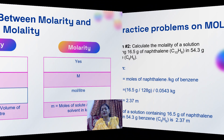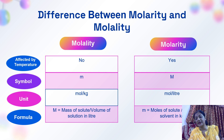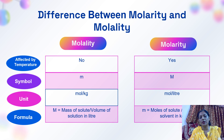Let's have a quick look at the differences between molarity and molality. Molality is not affected by temperature, so molality is better than molarity in that respect. The symbol for molarity is capital M and for molality is small m. Units for molality are mole per kilogram and for molarity are mole per liter.